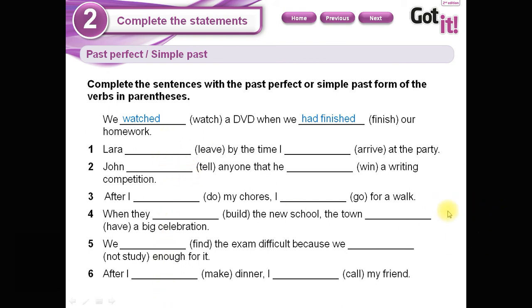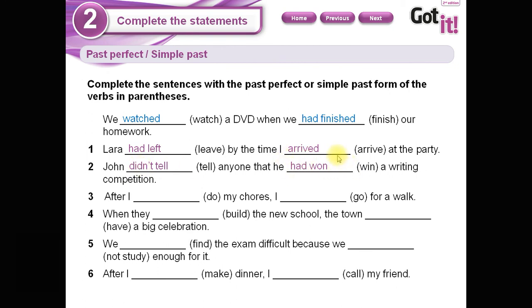Now we are going to check which are the correct options in each of these sentences. Look at the first one: 'Lara had left by the time I arrived at the party.' Lara se había ido para el momento en que yo llegué a la fiesta. Por lo tanto, lo que sucedió previamente, más lejos en el pasado: 'had left.' Number two: 'John didn't tell anyone that he had won a writing competition.' Lo que pasó primero es que él había ganado una competencia, y no le contó a nadie — esto fue lo primero.